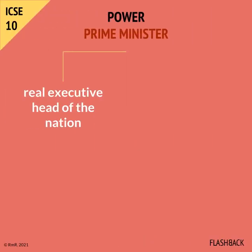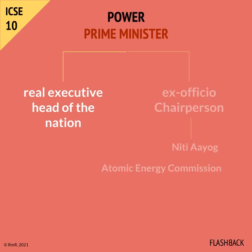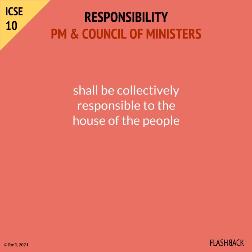The Prime Minister is the real Executive Head of the Nation. The Prime Minister is also the ex-officio Chairman of Niti Aayog and the Atomic Energy Commission. As per the Constitution, the Prime Minister and the Council of Ministers shall be collectively responsible to the House of the People. It follows the rule of collective responsibility, which states that Ministers fall and stand together. If the confidence in the Prime Minister has been lost, the President can dismiss all the Ministers.